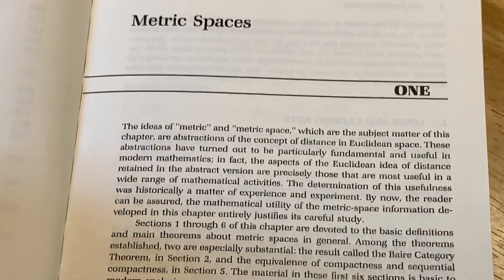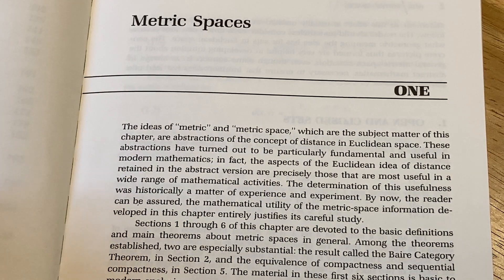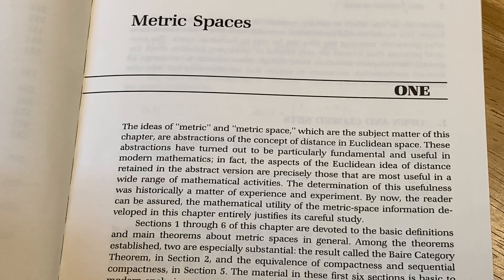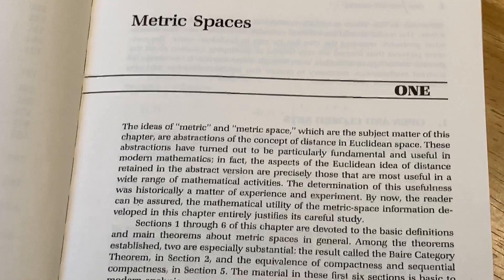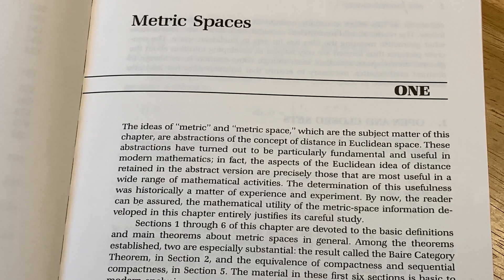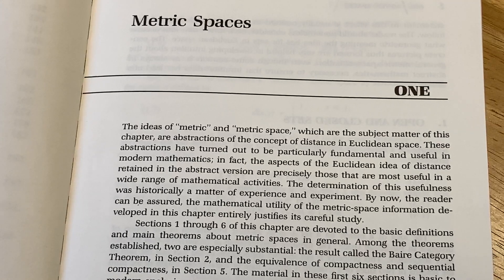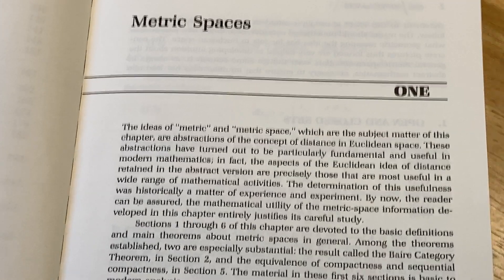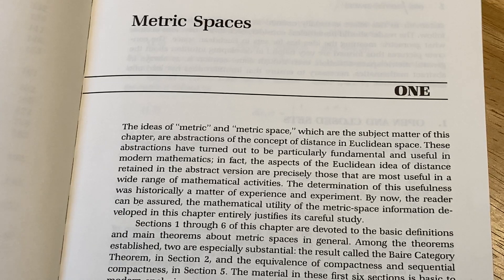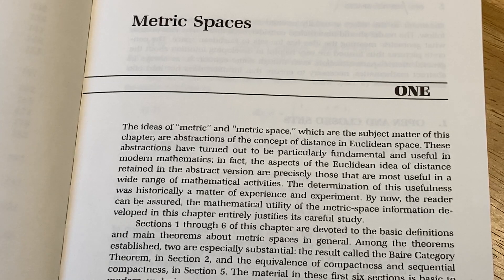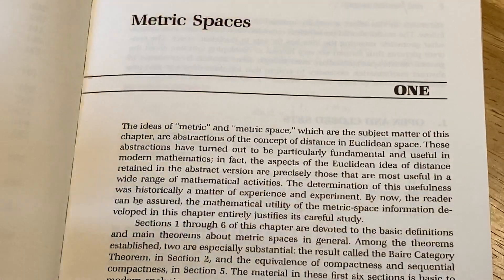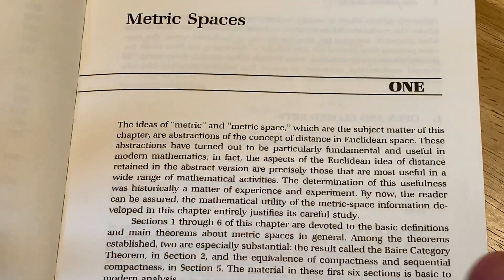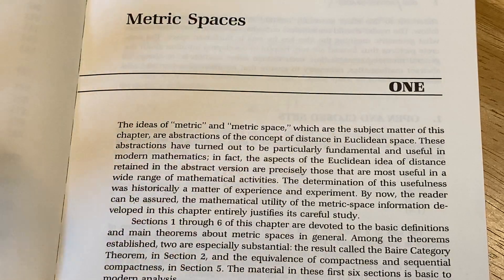In fact, the aspects of the Euclidean idea of distance retained in the abstract version are precisely those that are most useful in a wide range of mathematical activities. The Euclidean idea of distance, like the absolute value is the distance function, the one we know in one space. In two space, you could do something similar via the Pythagorean theorem. You can use the distance function with the Pythagorean theorem. And that's how you derive it. That's how you construct it using the Pythagorean theorem. So you construct that distance function on the plane, and then you have a metric space.